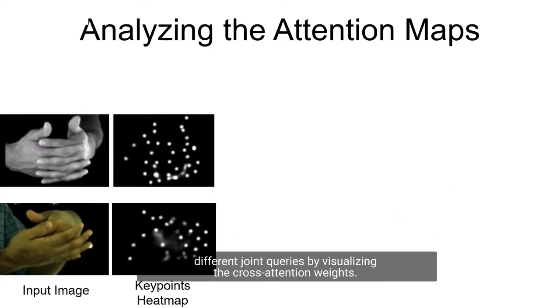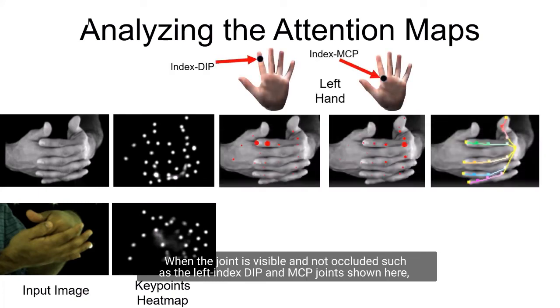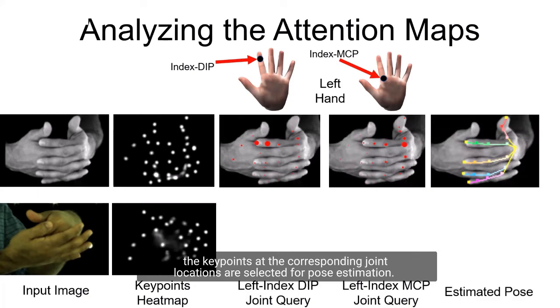We analyze the keypoints selected by different joint queries by visualizing the cross-attention weights. When the joint is visible and not occluded such as the left index DIP and MCP joints shown here, the keypoints at the corresponding joint locations are selected for pose estimation. The radius of the red circle corresponds to the magnitude of the cross-attention weight.